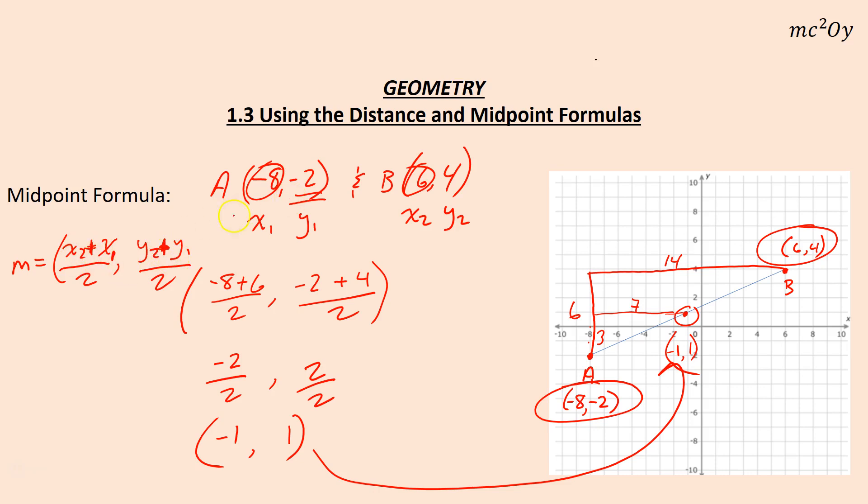So you're adding your x's, so really I added x one plus x two, but it doesn't matter the order here, as long as you add the x's, negative eight plus six, divided by two, or you could have done six plus negative eight divided by two, either way you get negative two, and negative two plus four divided by two, or four plus negative two divided by two, and you get two over two, which is one.